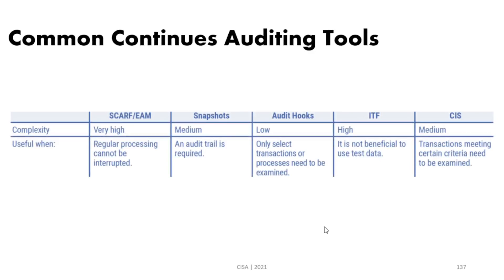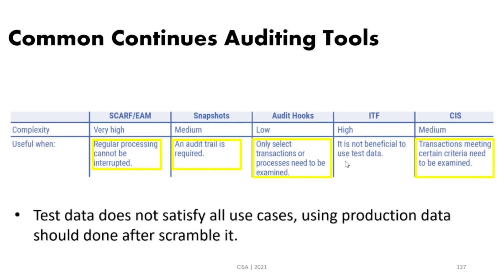Here is a comparison of all continuous auditing tools: when an audit trail is required, snapshot is the answer. When regular processing cannot be interrupted, SCARF EAM is used. When only specific transactions or processes need to be examined, audit hooks are used. When transactions meeting certain criteria need to be examined, CIS is used — it simulates whether a transaction needs to be audited. For ITF, it is important to note that test data is generally not ideal because it does not satisfy all use cases; it is better to use production data in ITF to get relevant information about the production environment.